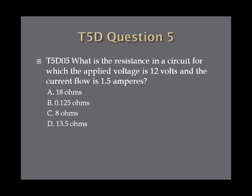Question 5: What is the resistance in a circuit for which the applied voltage is 12 volts and the current flow is 1.5 amperes? A. 18 ohms. B. 0.125 ohms. C. 8 ohms. Or D. 13.5 ohms.